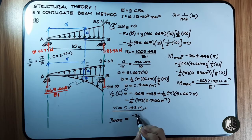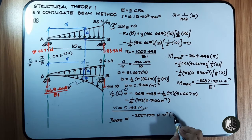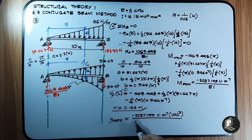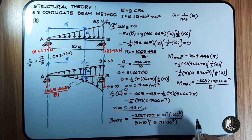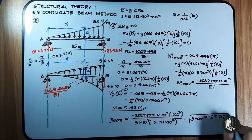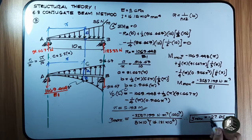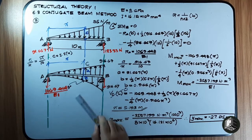Therefore y_max equals 3587.199 N·m³ converted to millimeters: multiply by 1000³ for mm³, divided by E (8 × 10³ N/mm²) multiplied by I (16.121 × 10⁶ mm⁴). The result is y_max = negative 27.815 mm. This matches the double integration result — same whole number answer, with only a small discrepancy in the decimal places.